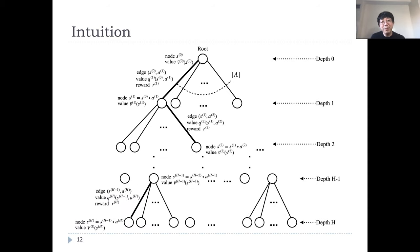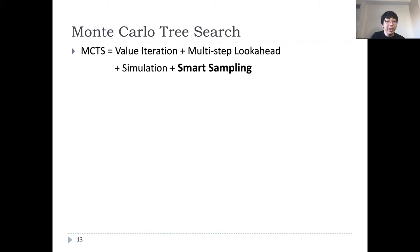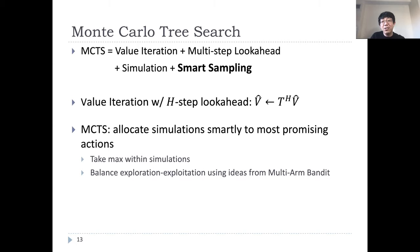Pictorially, for each simulation, we simulate one action at each stage, resulting in a length H path from the root to the leaf. The information of this path should be backed up to the nodes on this path, so that in the next simulation, the information could guide the selection of action to try, in the sense that one should pick the most promising action, according to the past simulations. To summarize, the MCTS we consider is basically a combination of value iteration with multi-step lookahead, plus smart sampling at each simulation.